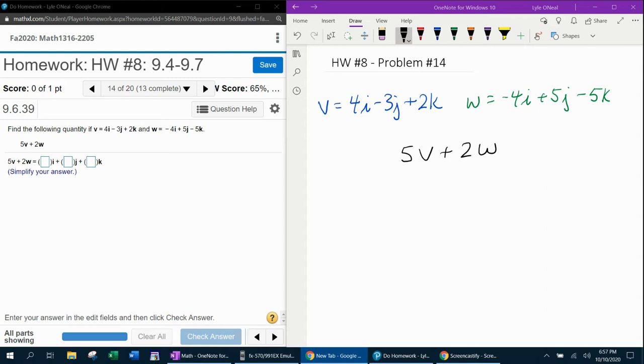It says find the following quantity, and they've given us two three-dimensional vectors. So they want us to find 5V plus 2W.